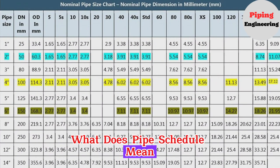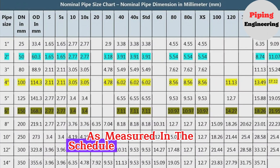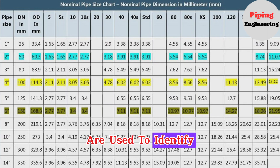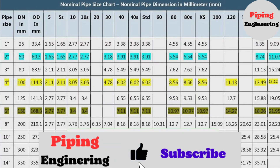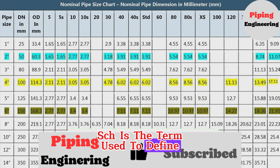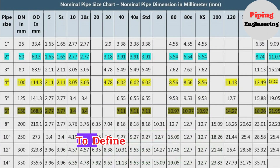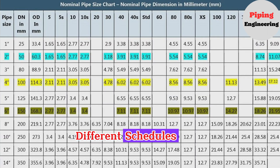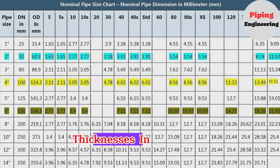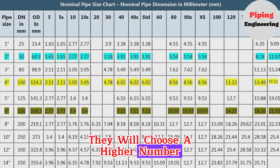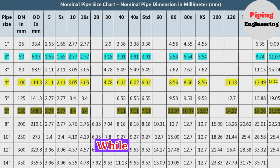What does pipe schedule mean? As measured in the schedule, two non-dimensional numbers — pipe diameter and wall thickness — are used to identify certain pipes, designated SCH. Pipe schedule, SCH, is the term used to define a pipe's wall thickness. Pipe schedule number is the standard method to define the thickness of pipes used in pipe fabrication. Differing schedules can result in different wall thicknesses in two pipes of the same diameter. Therefore, if someone is choosing a pipe for a high-pressure application, they will choose a higher schedule number, which indicates a greater wall thickness.